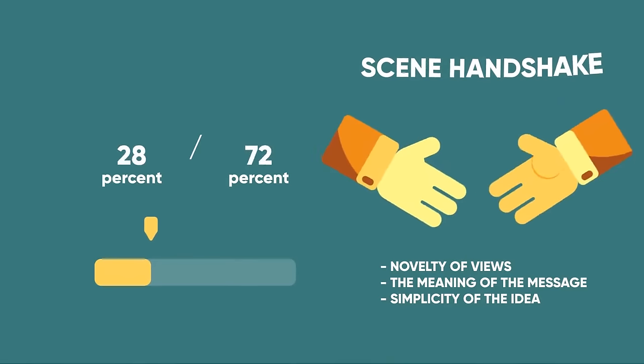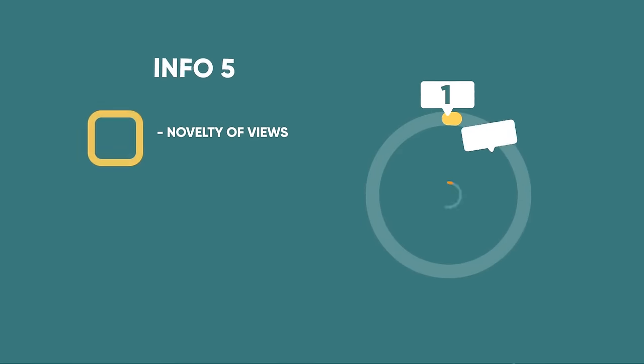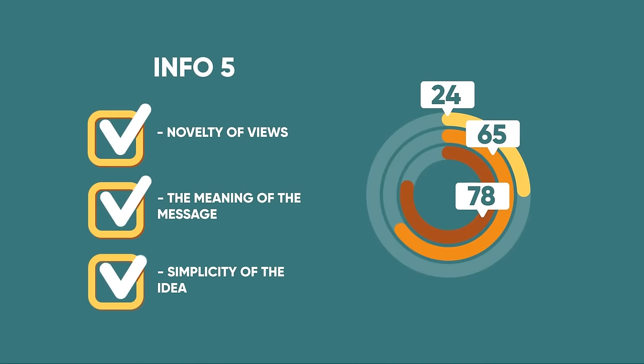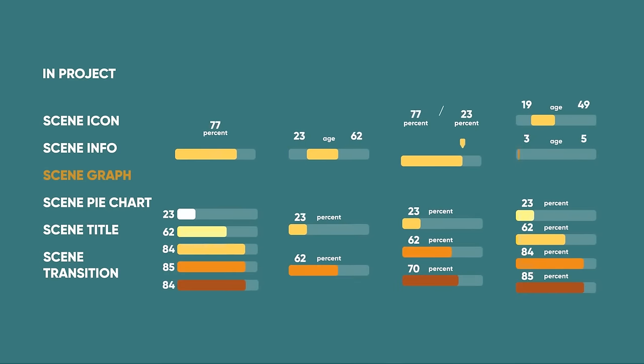As an example, consider the process of designing a product: how to get from idea to prototype, to mass production, and to quality assurance. Or in sales, how to move from generating leads to closing a deal. Or you can help a potential client figure out what they will have to go through in a particular process. In such an infographic, be sure to separate everything with points to make it easier for the viewer to navigate.